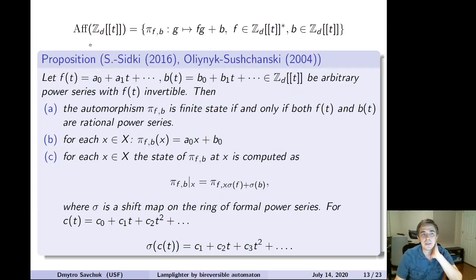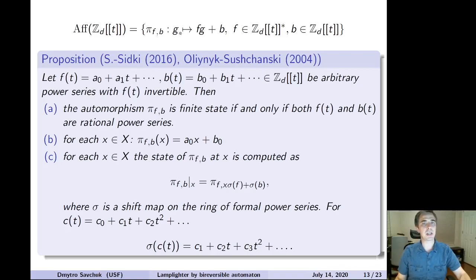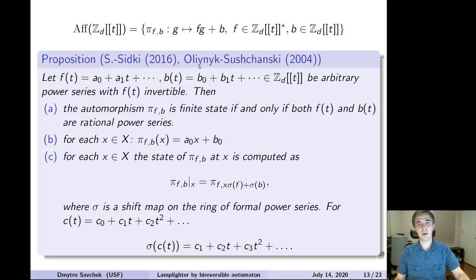More involved examples include so-called affine transformations of the ring of formal power series. You fix an invertible power series f(t) and another power series b(t) (not necessarily invertible), and define the transformation π_{f,b} which sends a power series g to f·g + b. This is a natural affine group, and it turns out this group also defines automorphisms of the tree X*. In this form the proposition was probably formulated for the first time in my paper with Said Sidki, though in more general settings it was known earlier by Alenyk and Sushchansky in 2004.